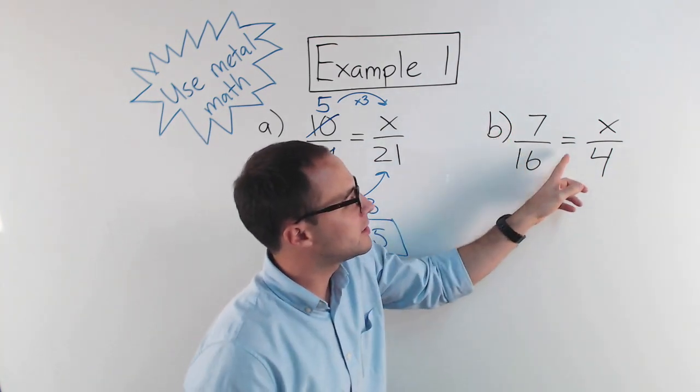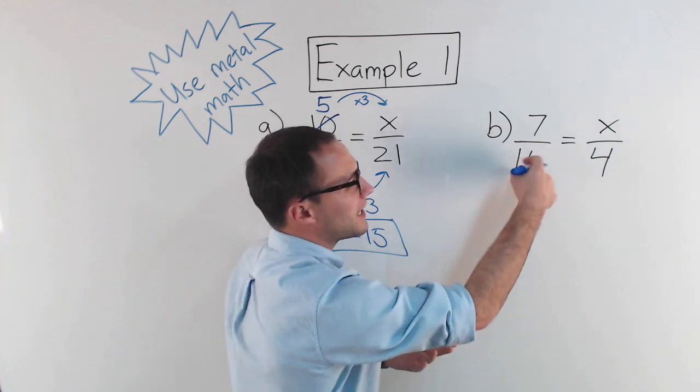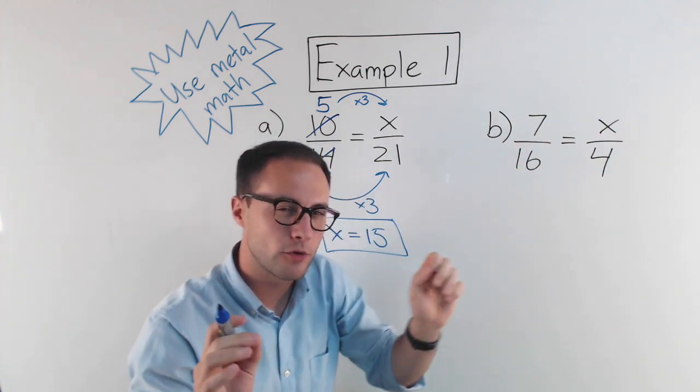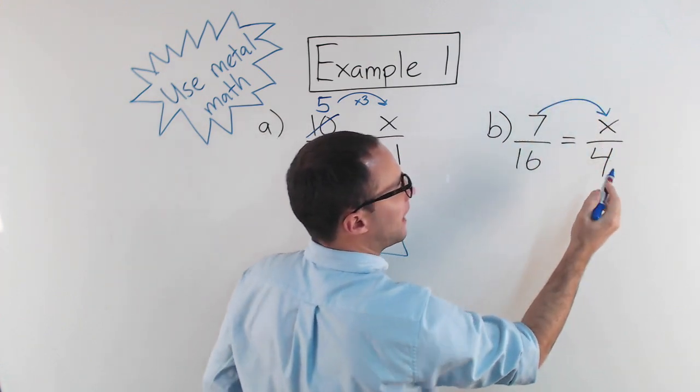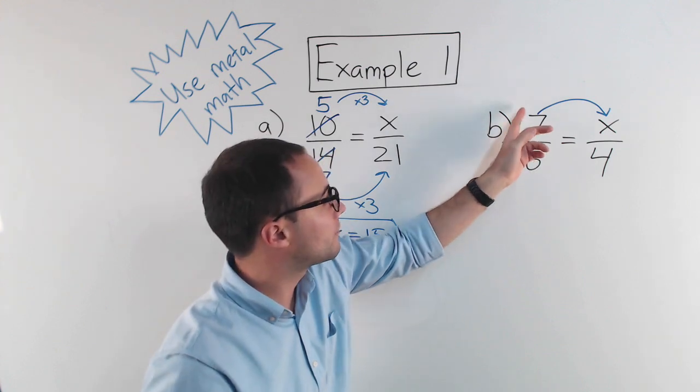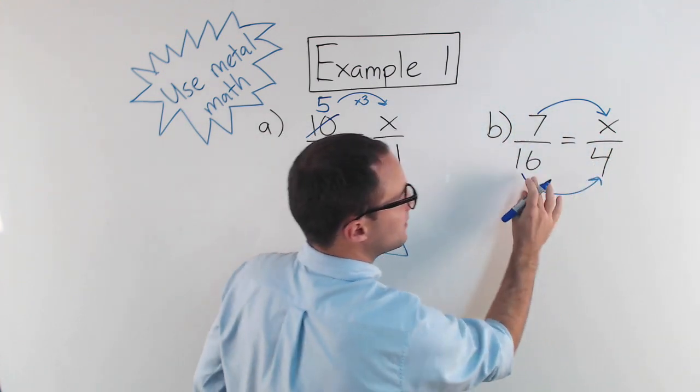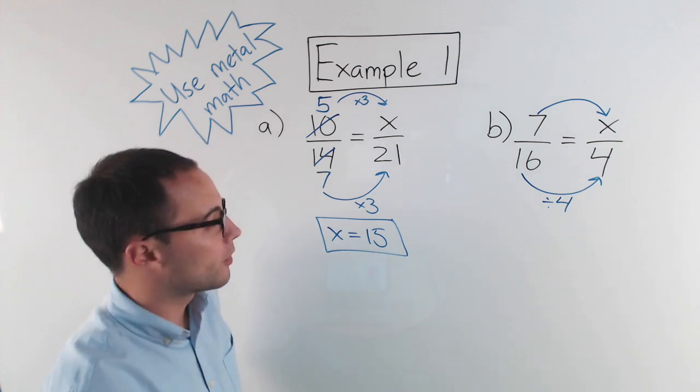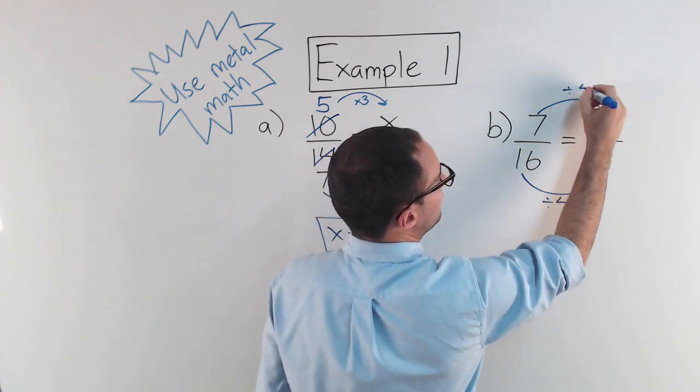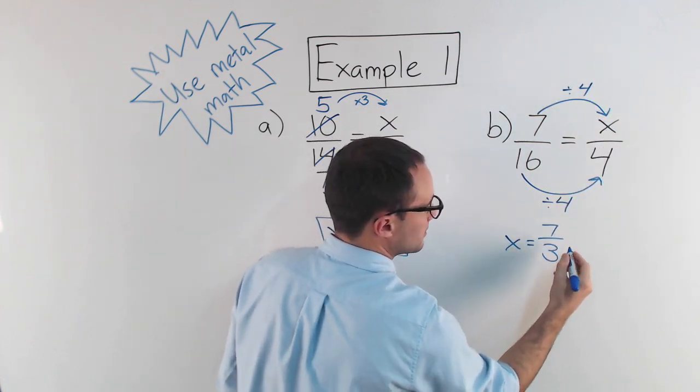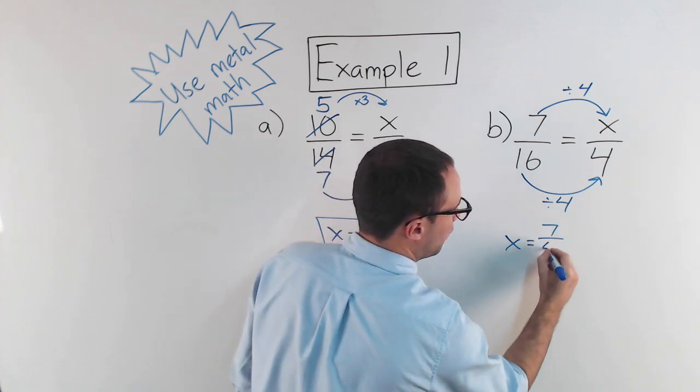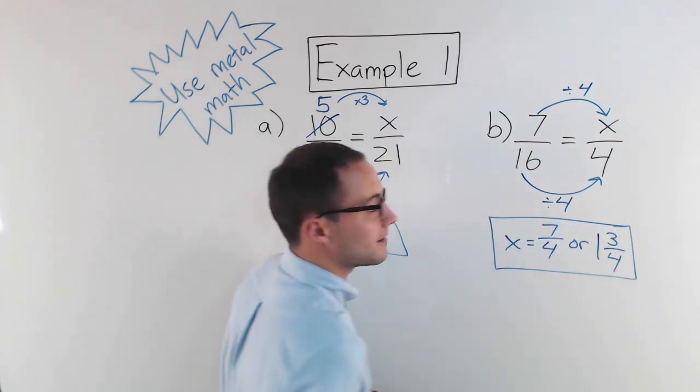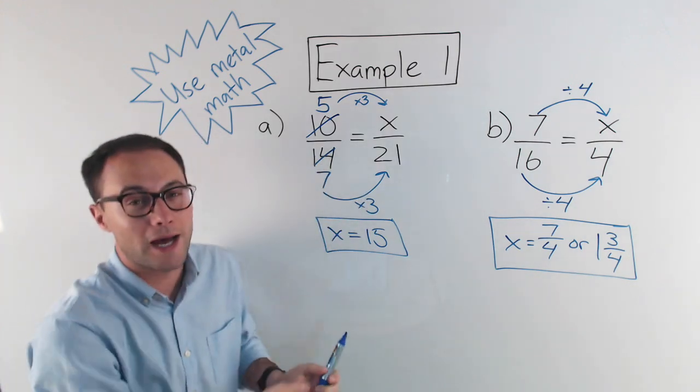Let's try the next one. 7 over 16 is equal to x over 4. Now, there's nothing to simplify there, and I don't need to. If I look over here, remember, I'm trying to get to x. That's really key. So I have to go this way. I'm not going the other way because I don't know what x is. I'm going from 7 to get to x. So I got to think, well, how do I get from 16 to 4? Well, that's simple. I just divide by 4, right? 16 divided by 4 is 4. So 7 divided by 4 will give me x. So x is equal to 7 fourths. Or I could write that as a mixed number, 1 and 3 fourths. And we're done. So very simple. Using mental math, that's our first method. Here's something to try on your own.